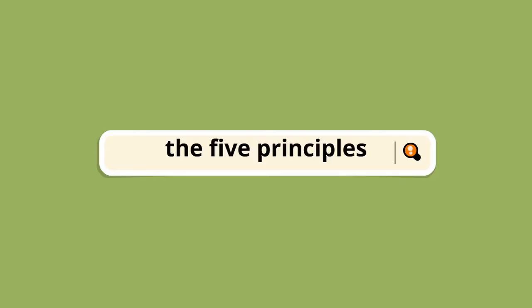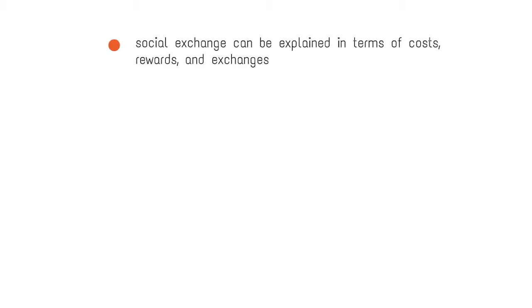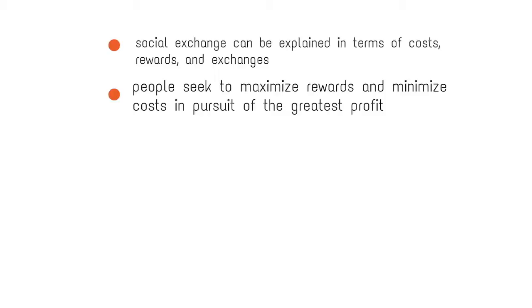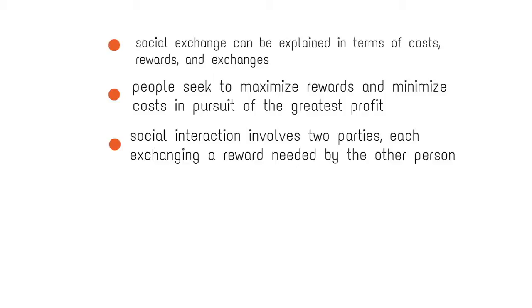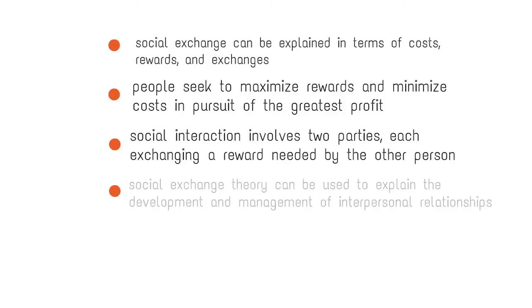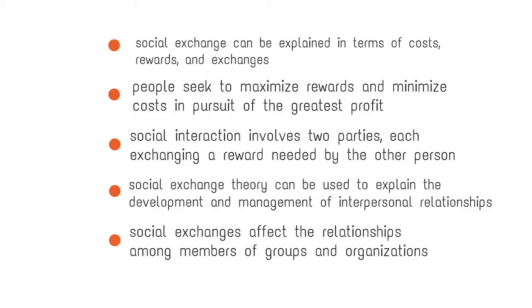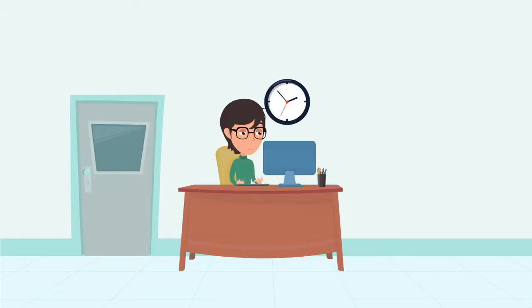This presentation will explain the five principles of the social exchange theory. These principles include the idea that social behavior can be explained in terms of costs, rewards, and exchanges. People seek to maximize rewards and minimize costs in pursuit of the greatest profit. Social interactions involve two parties, each exchanging a reward needed by the other. Social exchange can be used to explain the development and management of interpersonal relationships, and social exchange affects the relationships among members of groups and organizations.